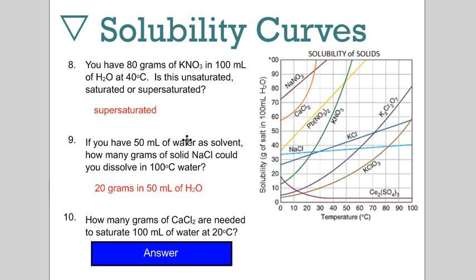Number ten, how many grams of calcium chloride are needed to saturate 100 mils of water at 20 Celsius? 20 Celsius, calcium chloride is this curvilinear line here at roughly 75 grams per 100 mils of water.